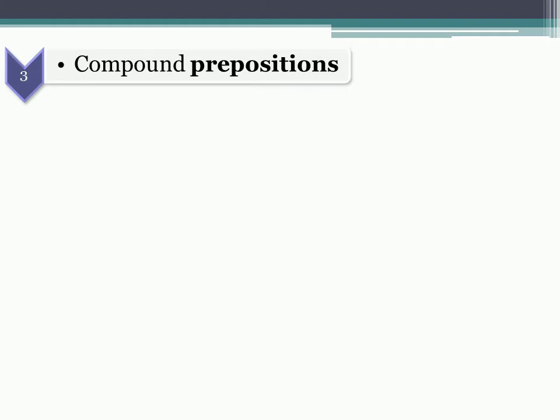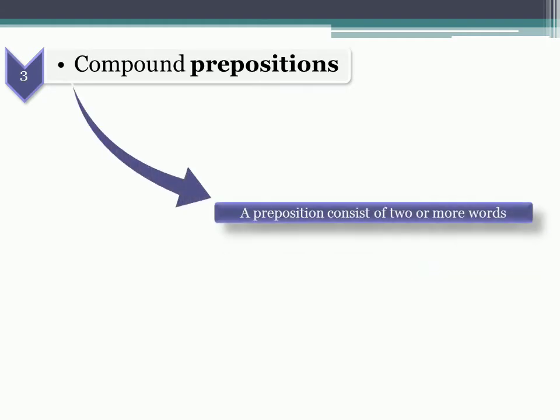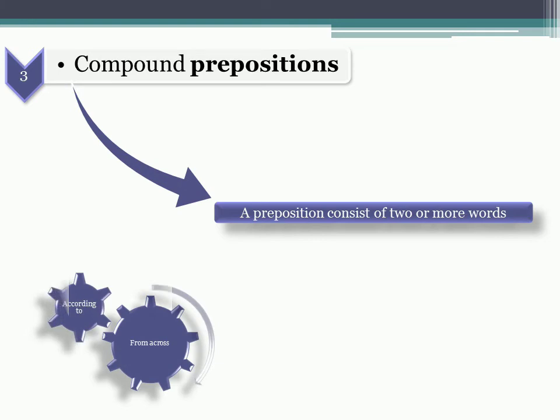Compound prepositions. It is also a preposition consisting of two or more words. Come across, according to, in front of. These are some examples of compound prepositions.